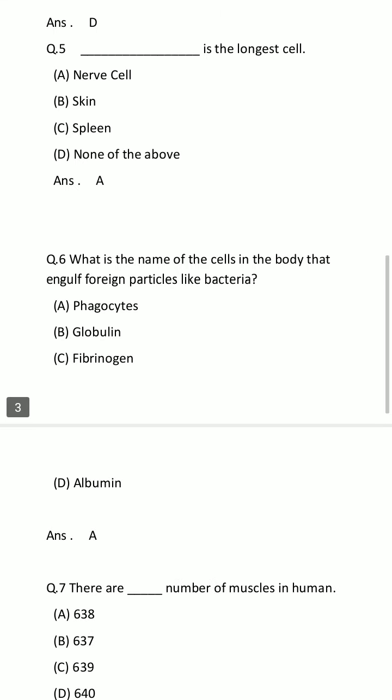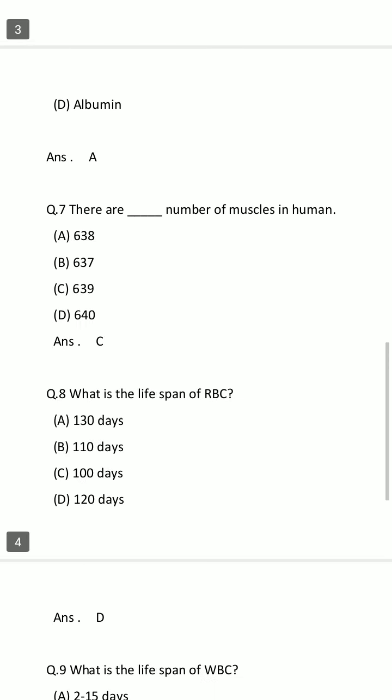Question number 6: What is the name of the cells in the body that engulf foreign particles like bacteria? Option A: Phagocytes. Option B: Globulin. Option C: Fibrinogen. Option D: Albumin. Your time starts now. The time is finished. The answer is Option A: Phagocytes.